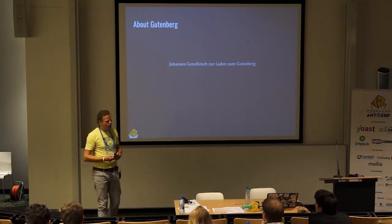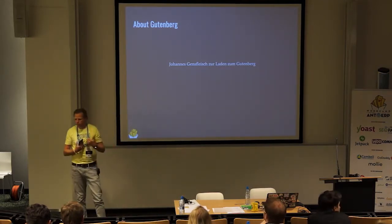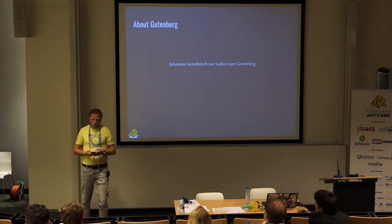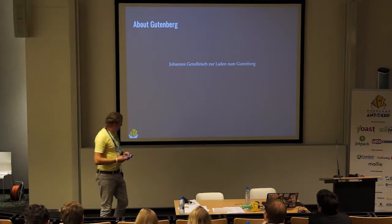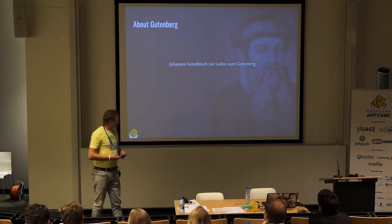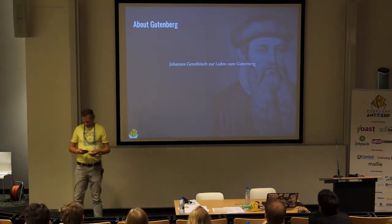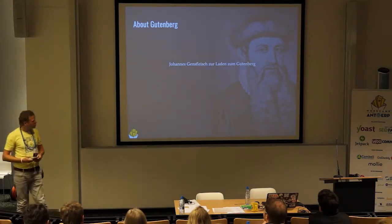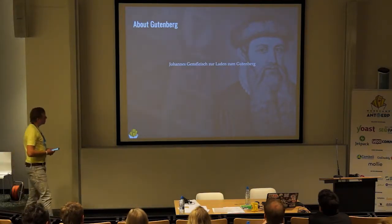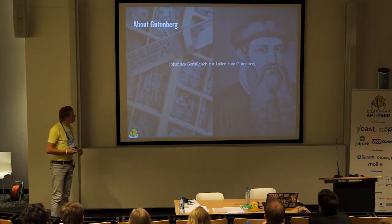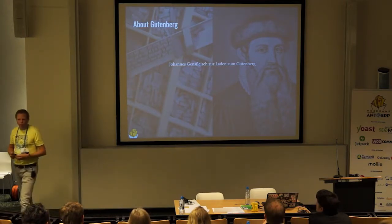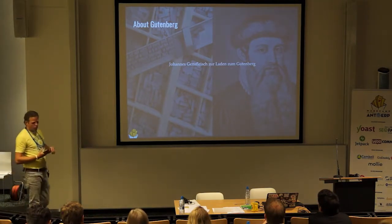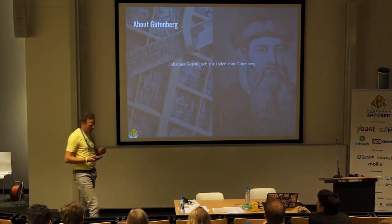Gutenberg totally revolutionized book printing. They started with the Bible, enabling it to be mass distributed everywhere. Here you see a picture of him — supposedly him, since we didn't have photographs at that time, so somebody drew him. And here is a piece of the machinery: a lot of letters placed on a piece of wood, put in a machine with paper and ink, and then you have a Bible.